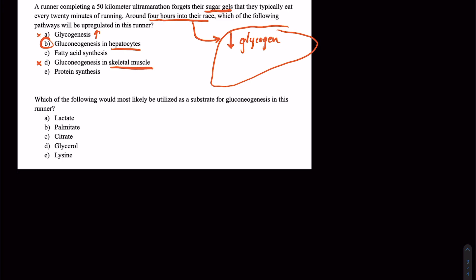That would be kind of more under the fed state or state where we're releasing insulin from the beta islet cells of the pancreas. Same thing with fatty acid synthesis. Another way to say this would be lipogenesis. That would be more in the fed state as well. We're releasing insulin along with protein synthesis. We don't want to be building up our muscles necessarily while we're running and expending energy.